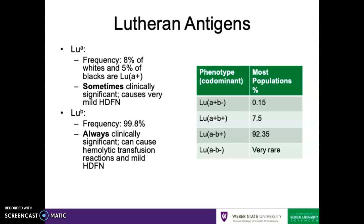The other common Lutheran antigen is Lutheran antigen B. It's a fairly high frequency antigen in 99.8% of the population. Antibodies to this antigen are always clinically significant, as most examples are going to be IgG and reactive at 37 degrees Celsius. These antibodies can cause hemolytic transfusion reactions and some mild HDFN as well. The A and B antigens in the Lutheran system are codominant, and there are quite a few more individuals who are Lutheran B positive rather than Lutheran A positive.